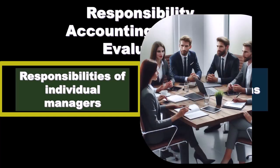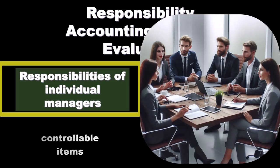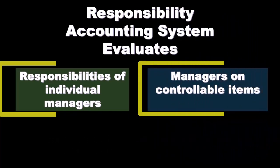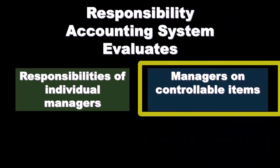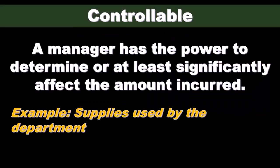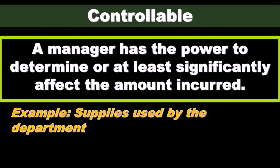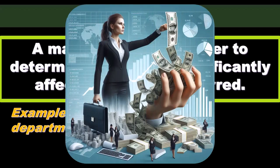Those items being the controllable items. So we're going to assign what is going to be a controllable cost versus an uncontrollable cost by the responsibility units — by the managers in charge of those units, those segments, those divisions of the organization. A controllable cost is one a manager has the power to determine, or at least significantly affect, the amount incurred. So we're thinking about those costs where management has control over them.